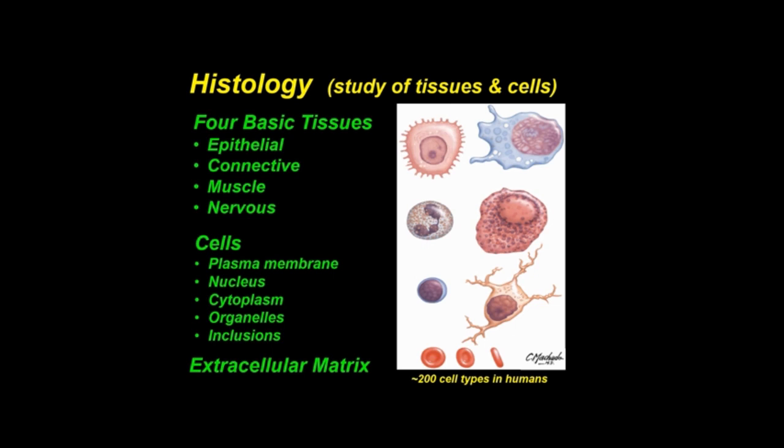and the surrounding gel-like cytoplasm, with organelles and inclusions. Extracellular matrix is around cells; it is the product of cell secretion. Totaling 60 trillion in the body, some 200 different cell types are found in humans.